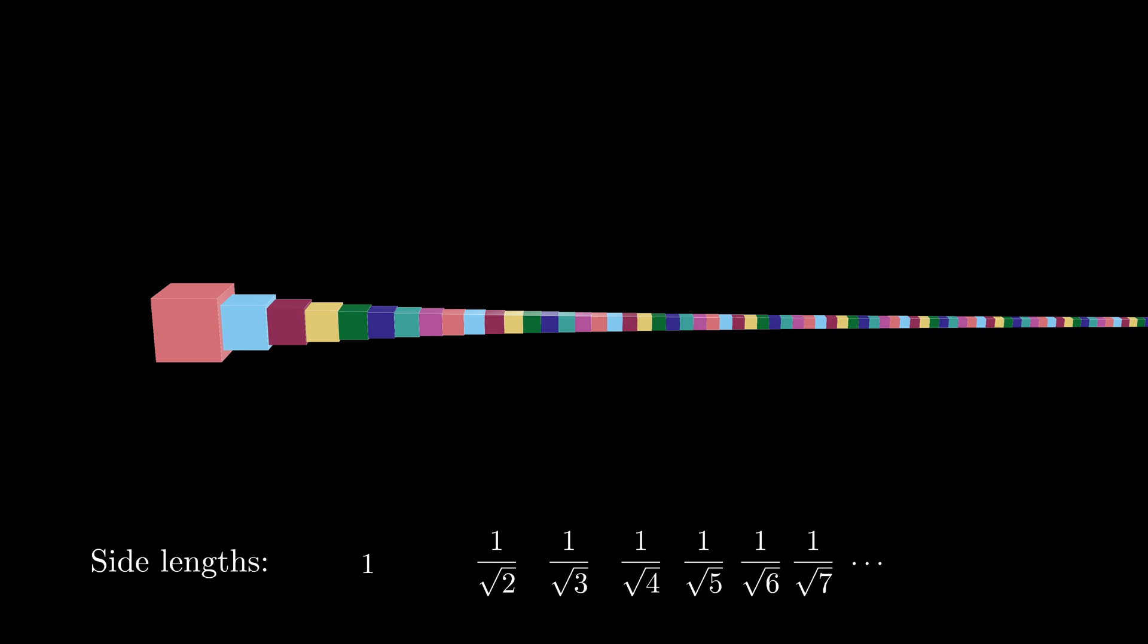This structure is called the infinite gift. It turns out that if we want to compute the length of the gift, we simply add up the side lengths so we get the sum where i ranges from 1 to infinity of 1 divided by the square root of i. This infinite series diverges and so this sum is infinite.